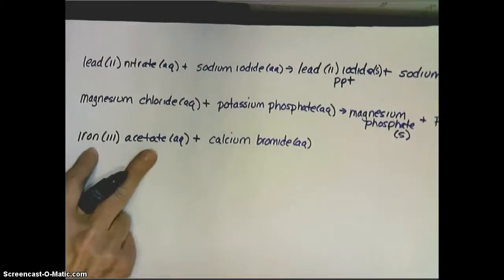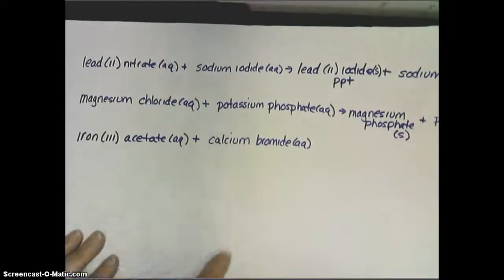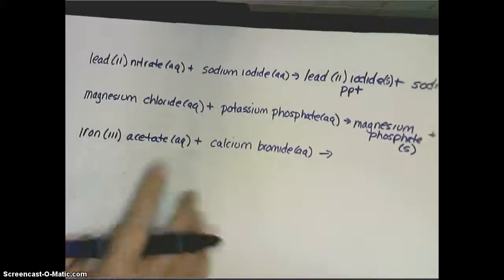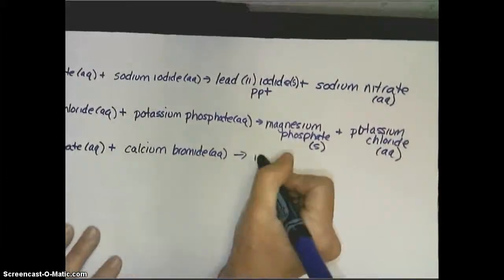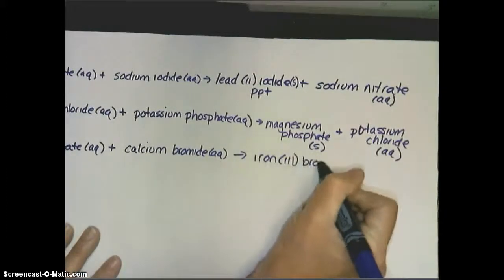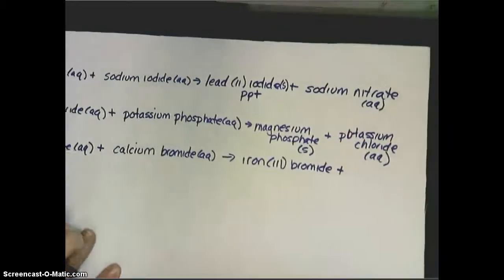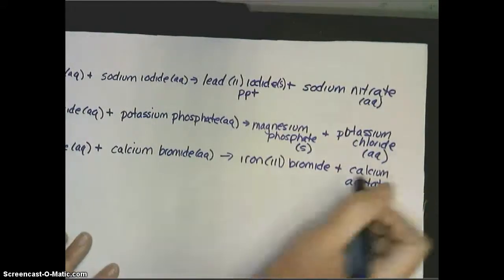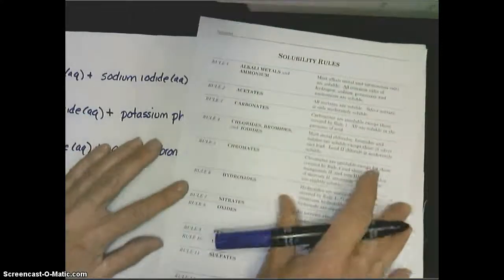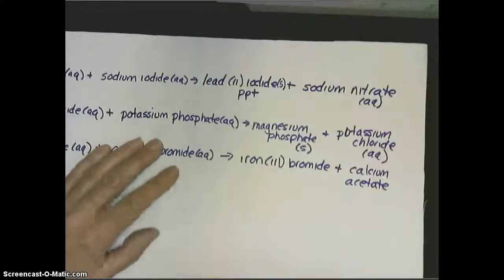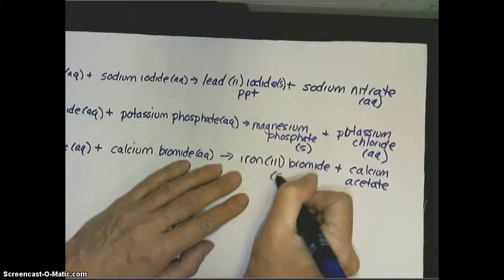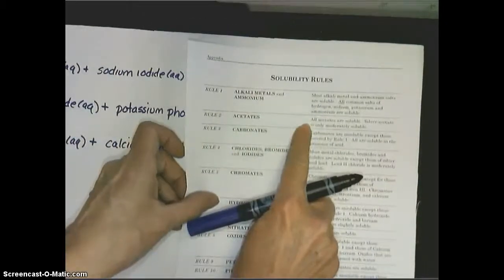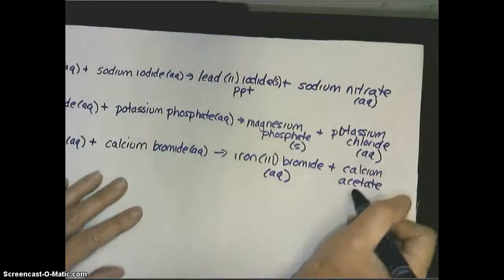Let's do one last one. I have iron-3 acetate floating around separately and calcium bromide floating around separately — a positive and a negative, and a positive and a negative. They're going to switch partners again. So, what does the iron-3 go with? The iron-3 is now going to go with the bromide, so I have iron-3 bromide. What's the acetate going to go with? The calcium. So, then I have calcium acetate. Now I have to look up on my sheet. Bromides are soluble except for silver and lead — we're not using silver or lead, so that must be soluble. Calcium acetate — that's an easy one because of our acetate rule: they're all soluble. So, calcium acetate is also soluble.